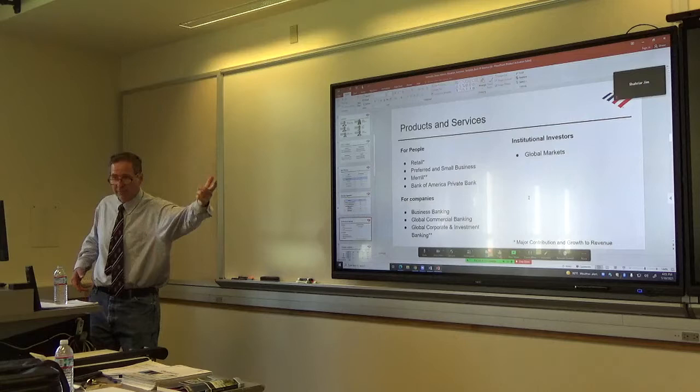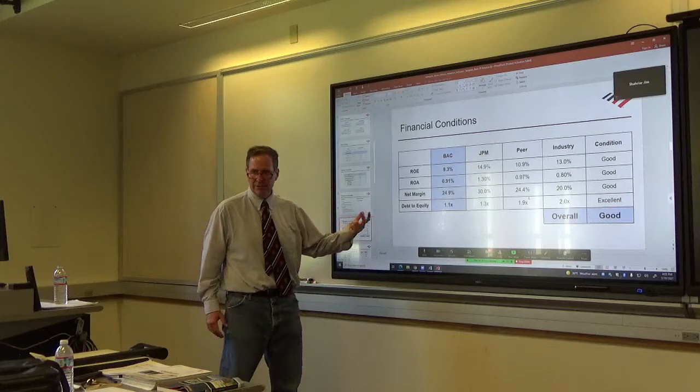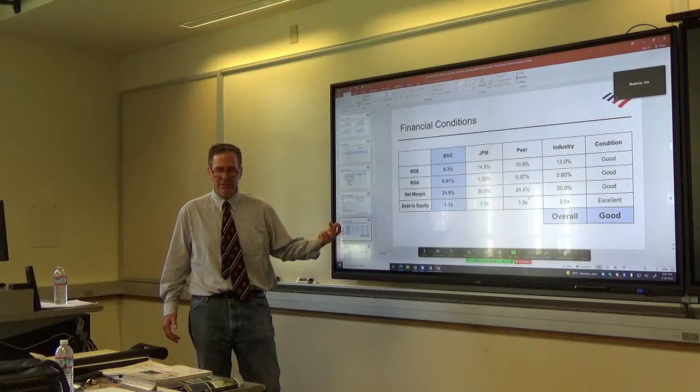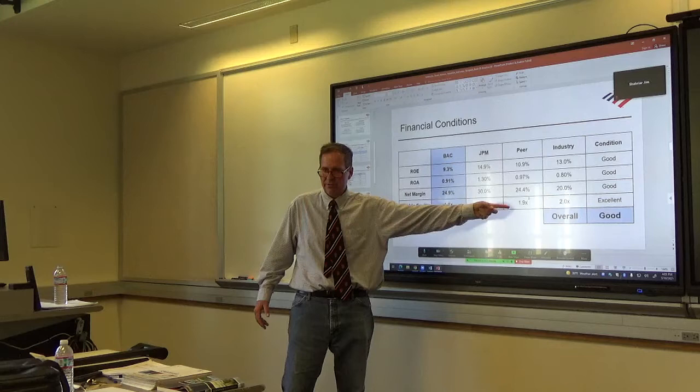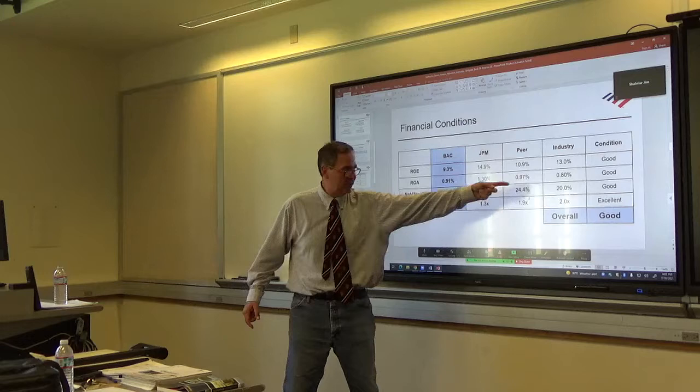Then you have your financial statement analysis. The overall financial conditions and position of the firm compared to your competition. So you have your direct competitor. You've got your weighted average ratios. We use the assets to do the weighted averages. That becomes the peer group ratios.